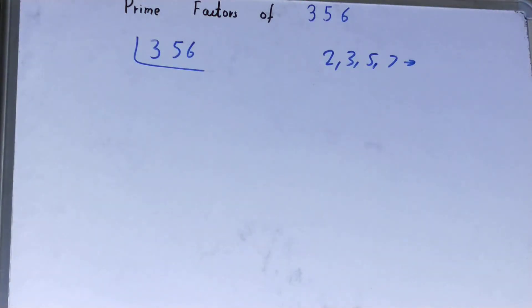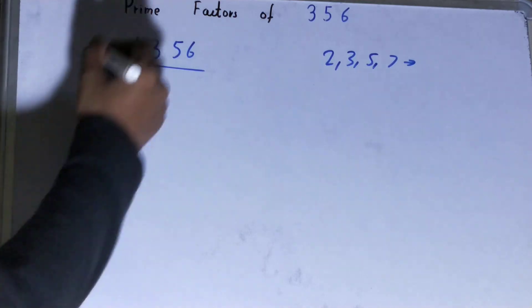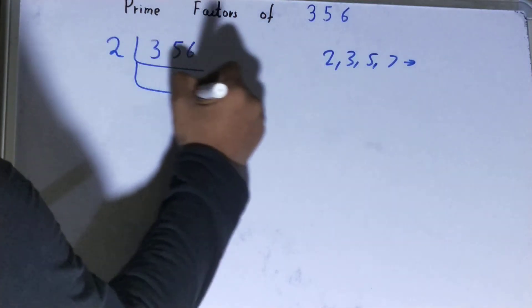What we'll do is start with the lowest prime number we have, that is 2. Is the number 356 divisible by 2? Clearly it is, because it is an even number. So divide it and you'll be left with 178.